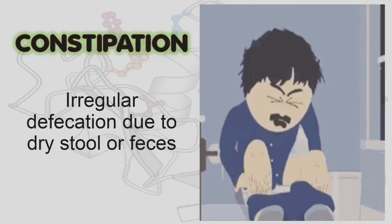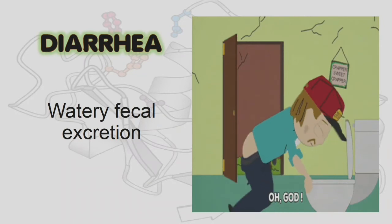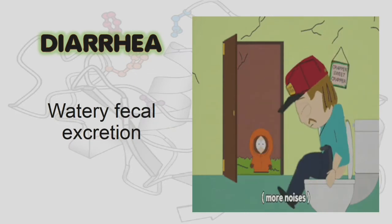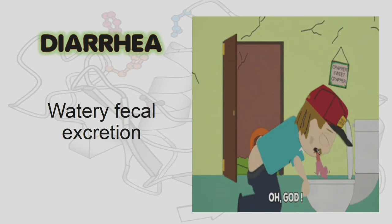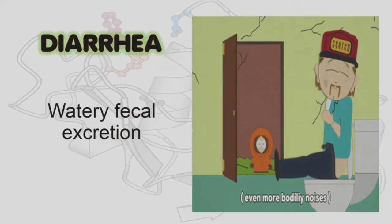The next digestive disorder is diarrhea. While constipation involves hard stool, diarrhea is a watery fecal excretion that can lead to dehydration and weakness, especially in children and the elderly. It is caused by microbial infection or contaminated food and water, and symptoms can include dizziness, vomiting, abdominal pain, and fever. It can be treated by avoiding fatty foods and drinking oral rehydration fluids with salt or sugar to replenish fluids and avoid dehydration.